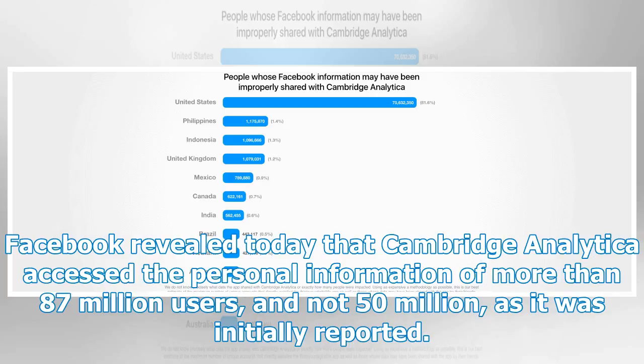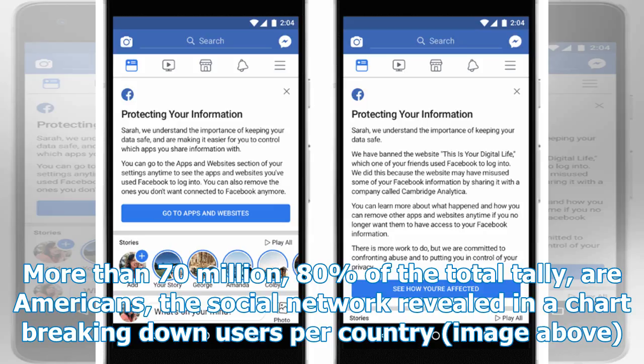Facebook revealed today that Cambridge Analytica accessed the personal information of more than 87 million users, and not 50 million as it was initially reported. More than 70 million, 80% of the total tally, are Americans, the social network revealed in a chart breaking down users per country.